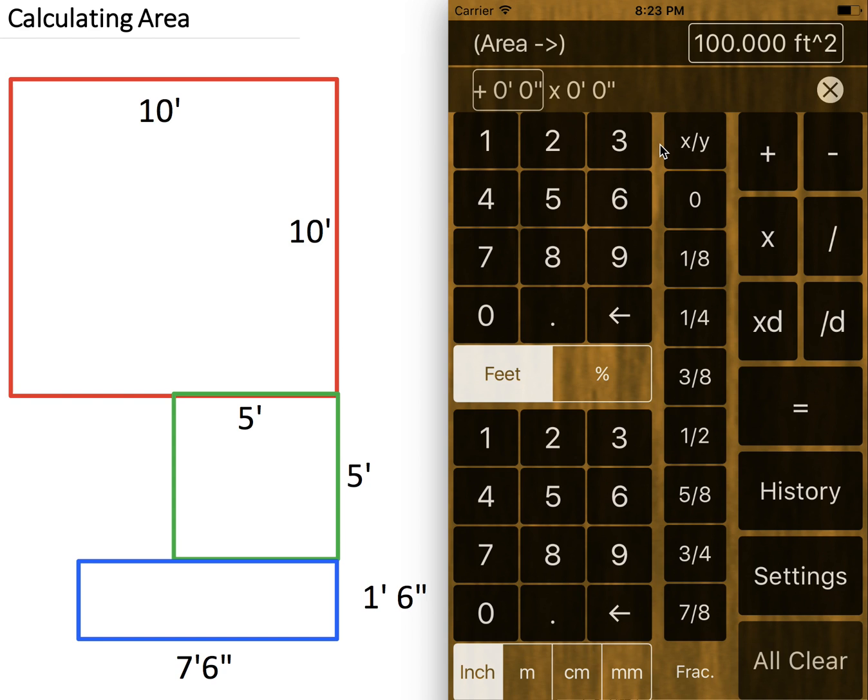Now, it's a little bit different on the second calculation. Notice that we have two inputs. So the first input will be five feet, five feet, and then just simply click on the second input and enter your second dimension.